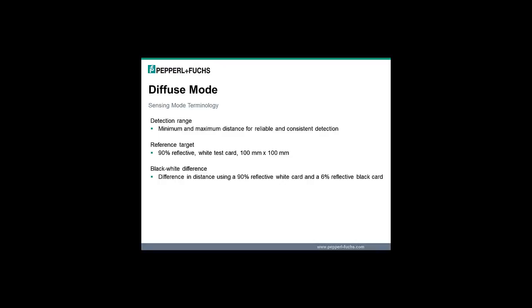For diffuse mode sensors, the black-white difference tends to be significant. For example, the diffuse mode sensor may detect a white colored object up to a few feet away. But this will not be the case when detecting a dark colored object — rather than a few feet away, the dark colored object may only be detected up to several inches away.